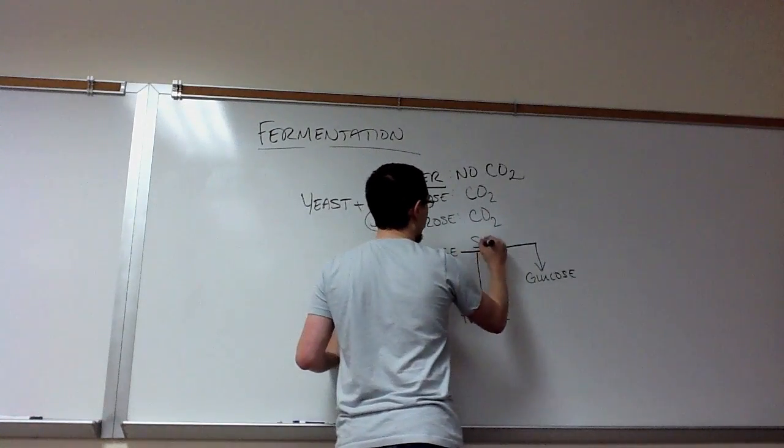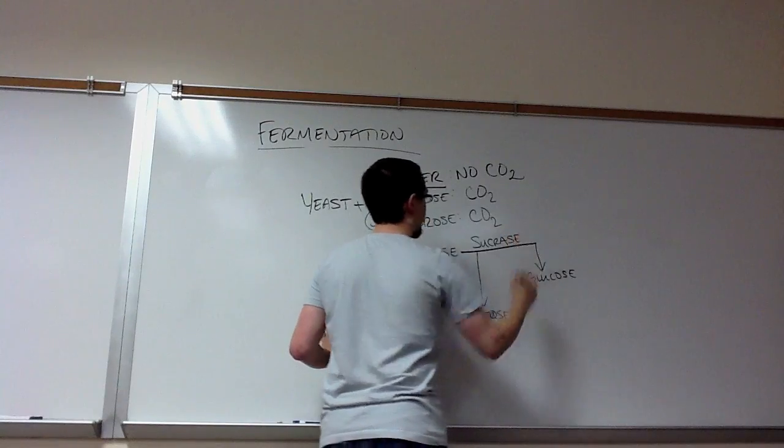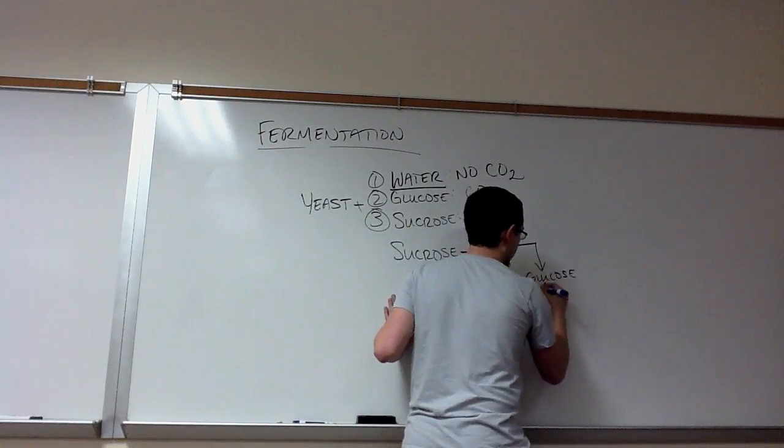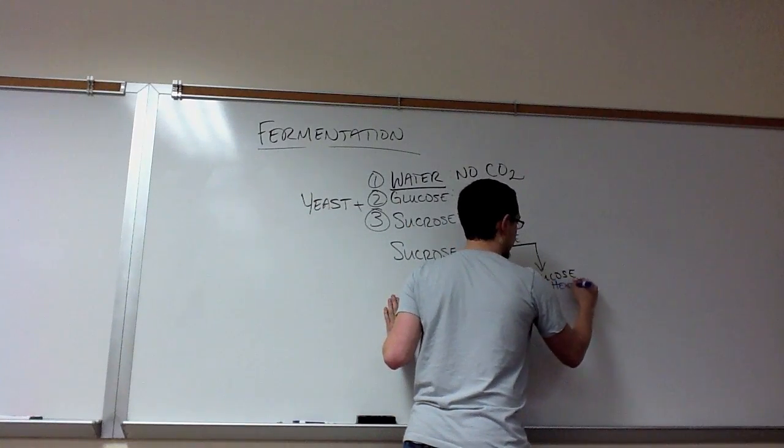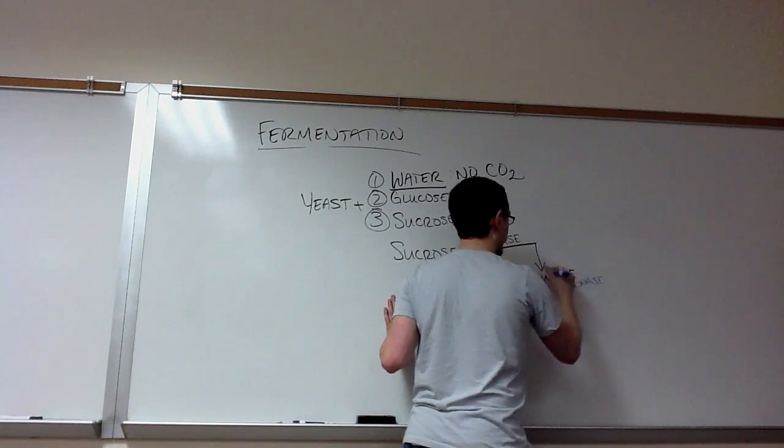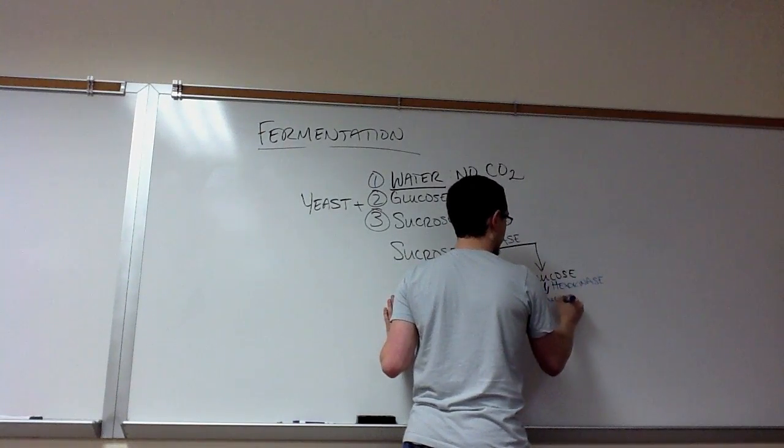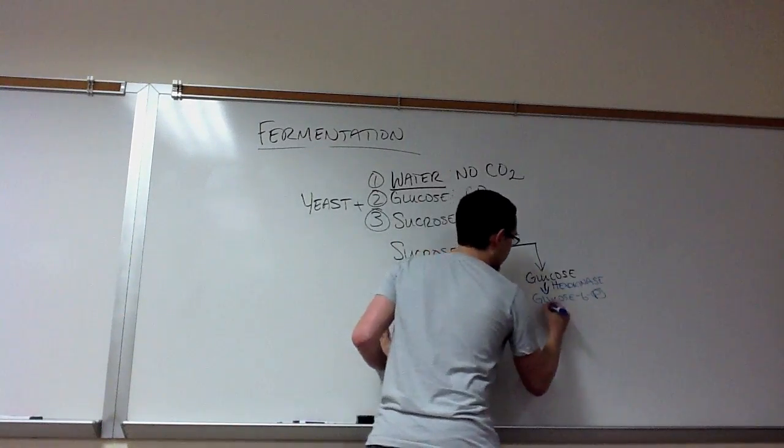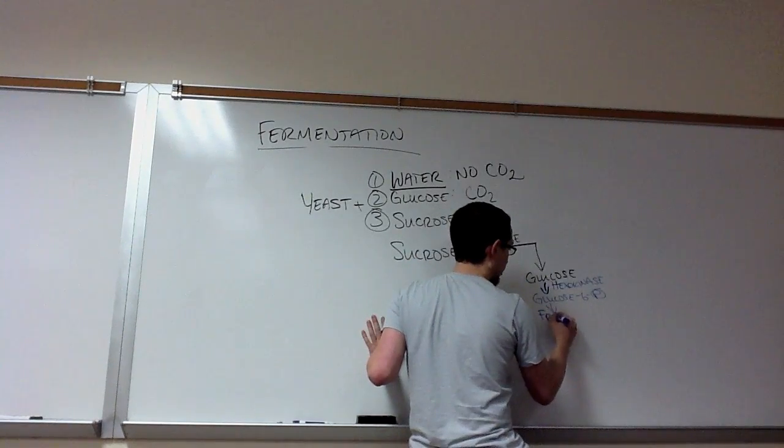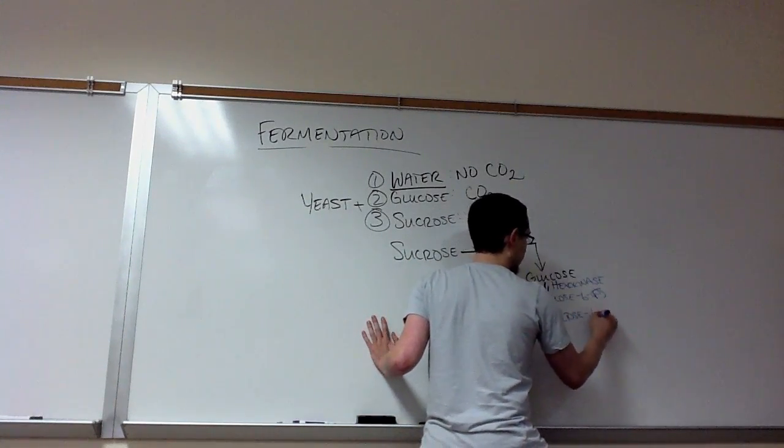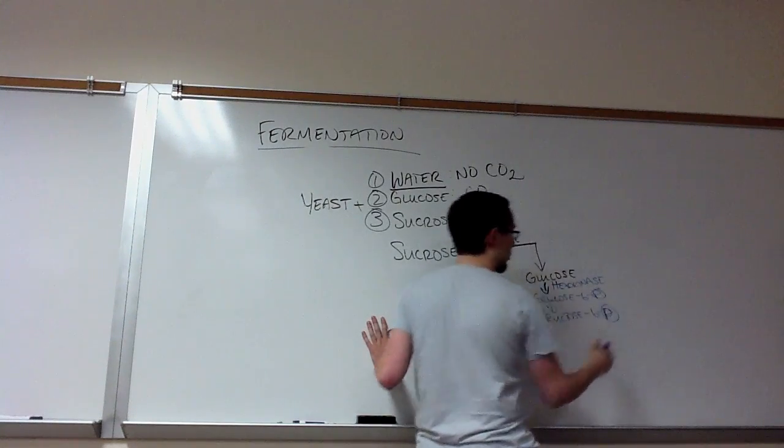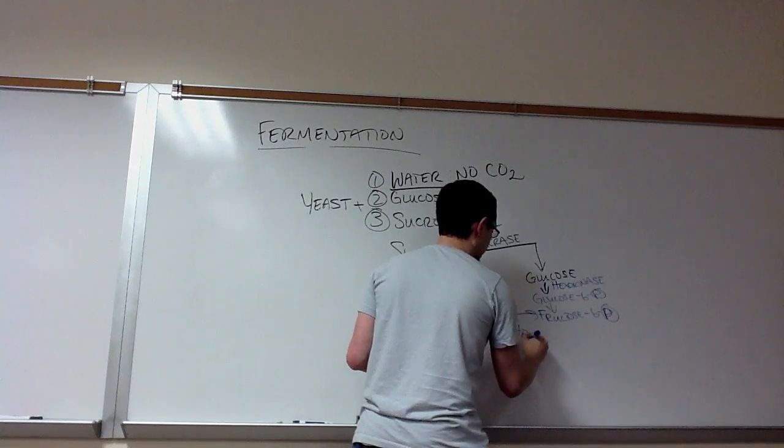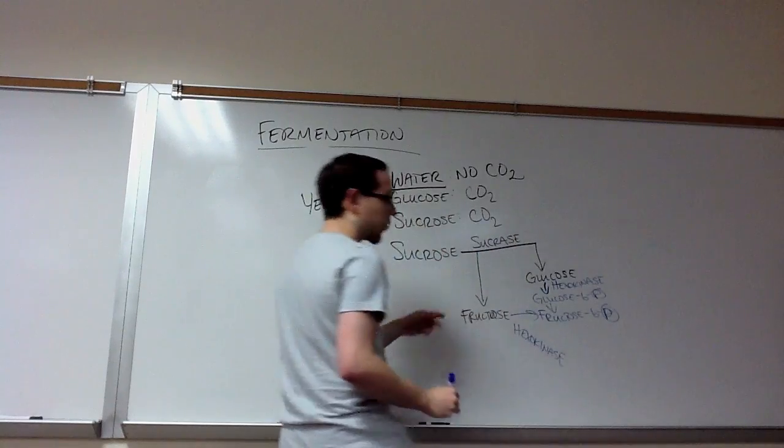This is done by an enzyme called sucrase, while glucose does not require this step. But after it has been converted, there's an enzyme called hexokinase that converts glucose into glucose-6-phosphate. And then that glucose-6-phosphate is converted into fructose-6-phosphate. This is all seen in your lab manual. And that same enzyme, hexokinase, actually does the same thing to fructose.